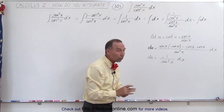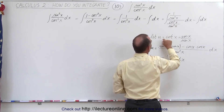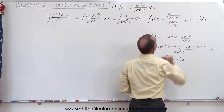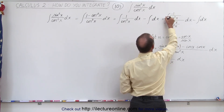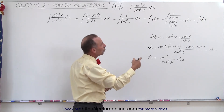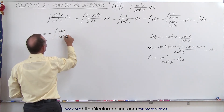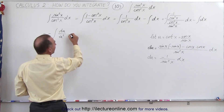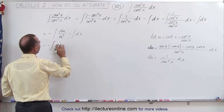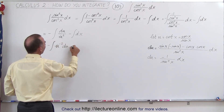Notice that it's almost what we have in the numerator. If we let cosine divided by sine equal the cotangent and set that equal to u, then the differential du is the negative of what we have in the numerator. So we need a negative sign here and a negative sign in front. Now we have the negative of the integral of du over u squared, minus the integral of dx. We'll write it as the negative of the integral of u to the minus 2 du, minus the integral of dx.